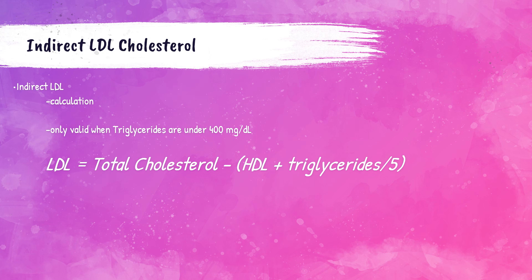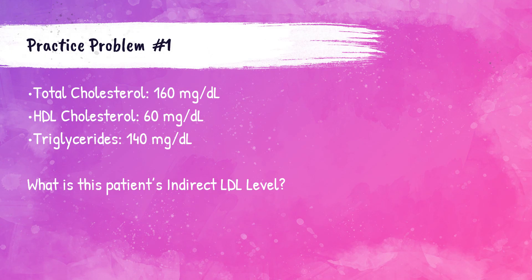I've got three patients here that we're going to go through practice problems on. The first patient has a total cholesterol level of 160 milligrams per deciliter, which is normal. HDL cholesterol is 60 milligrams per deciliter, also a normal range. And the patient's triglycerides are 140 milligrams per deciliter. We need to calculate the patient's indirect LDL level. Are we able to do this? Yes — the triglycerides here are under 400 milligrams per deciliter, so we can proceed to doing the calculation.